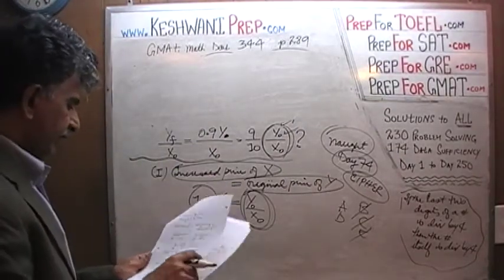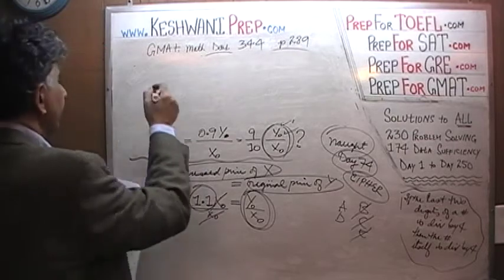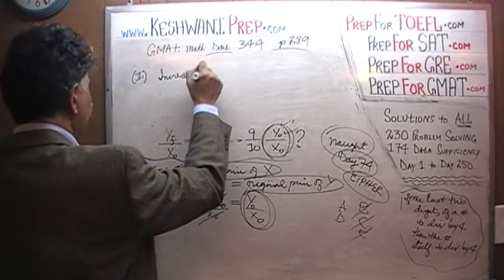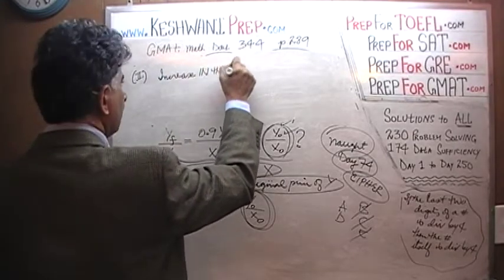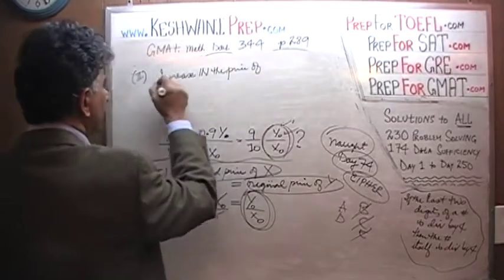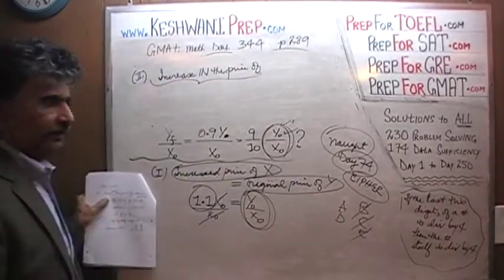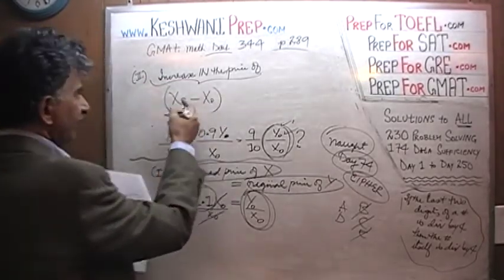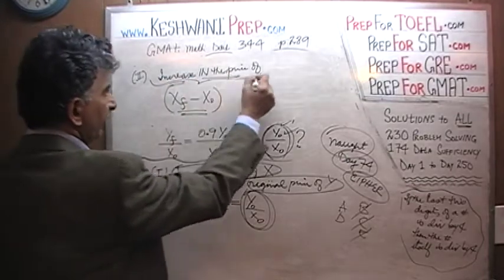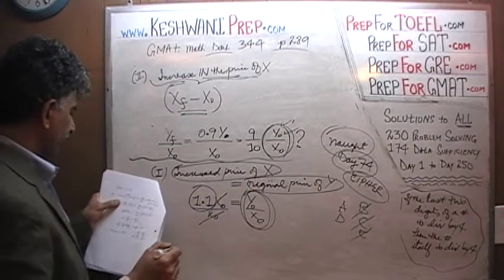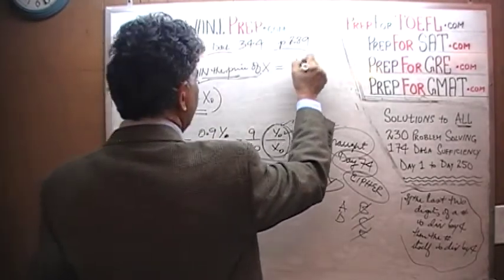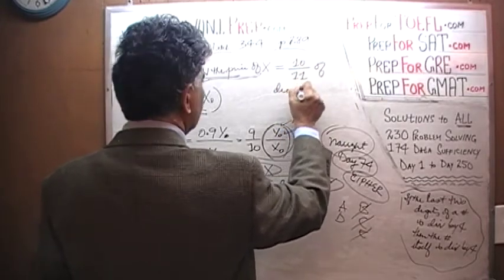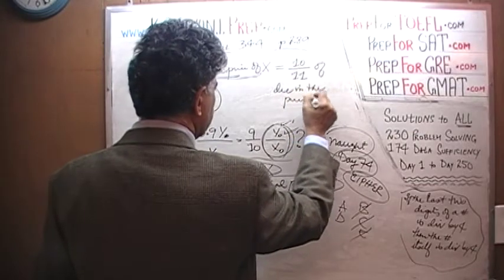Let's look at the second statement. The second statement says: the increase in the price of X — which is the final price of X minus the original price of X — is equal to 10 over 11 of the decrease in the price of Y.